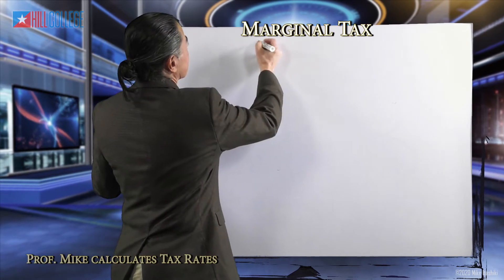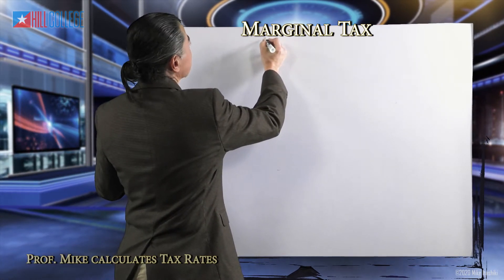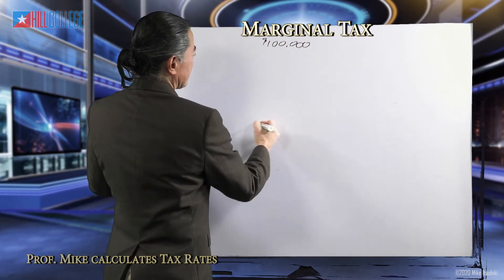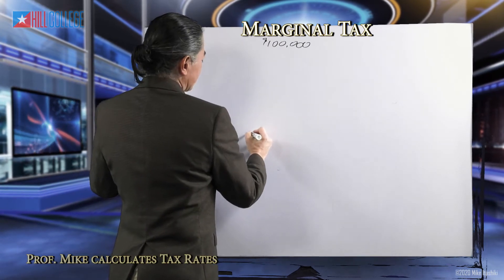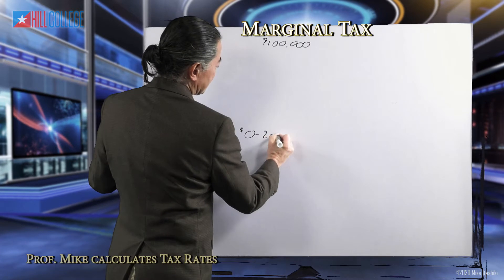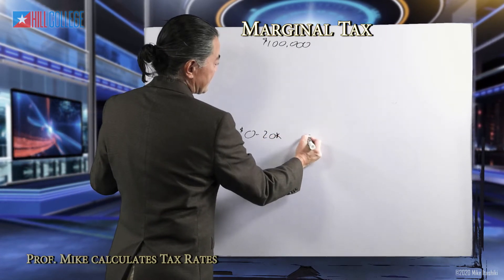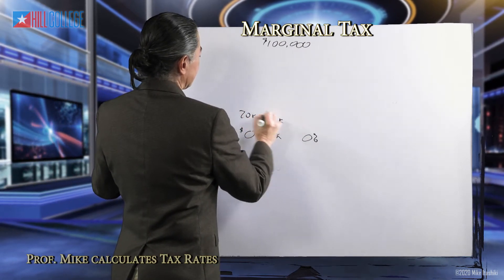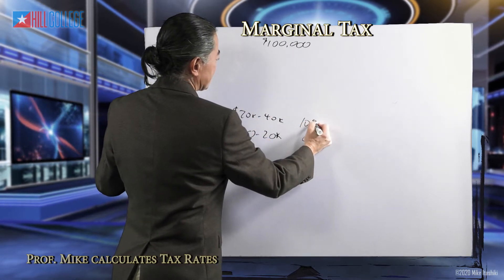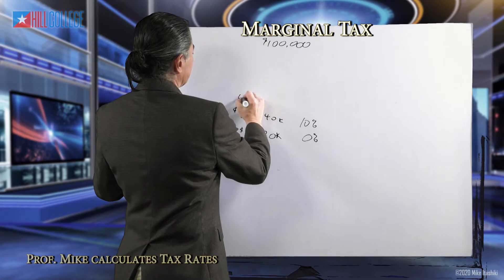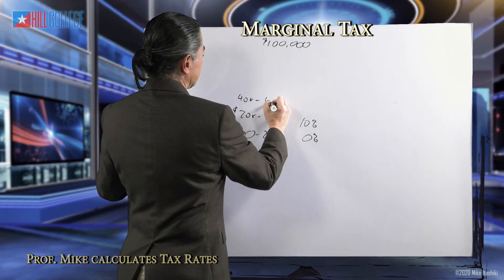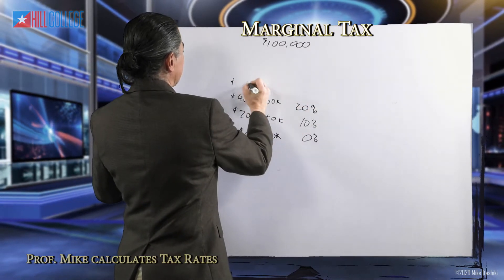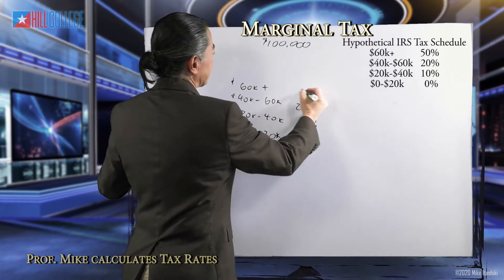So let's say someone makes $100,000. The first margin, between $0 and $20,000, is taxed at 0%. The next $20,000 to $40,000 is taxed at 10%. And $40,000 to $60,000 is taxed at 20%. And $60,000 and above will be taxed at 50%.